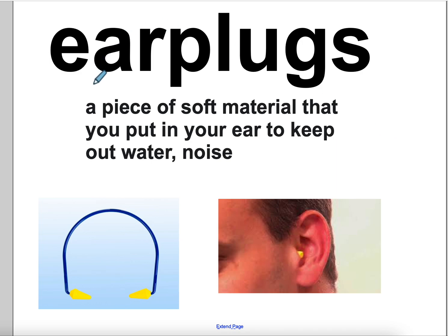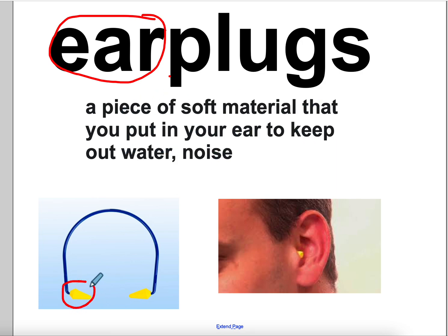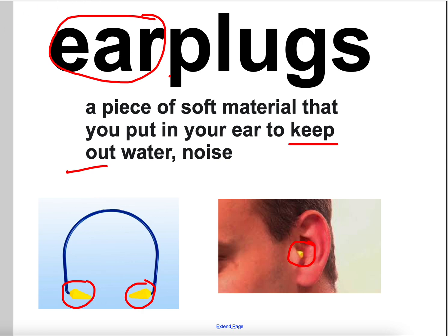The next word is earplugs. Here goes the word 'ear' again. Ear-P-L-U-G-S. Earplugs are a piece of soft material that you put in your ear to keep out water or noise. This is the soft material that you put in your ear. Some of them have an attachment that you can put over your head. Some you just stick in your ear and it blocks out noise. So go to the next slide so we can begin reading.